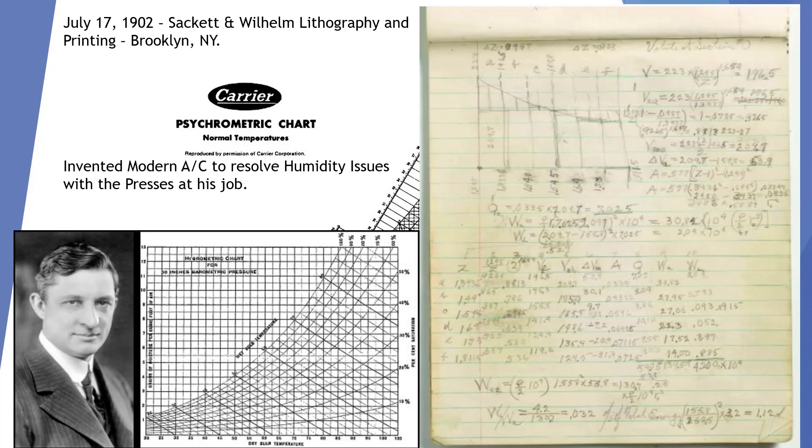Willis Carrier is often called the father of modern air conditioning. In 1902, he was working at a lithography and printing business in Brooklyn, New York. They were having issues with their presses because of the high humidity. Willis Carrier invented modern air conditioning to take care of the humidity issues that they were seeing at the presses.